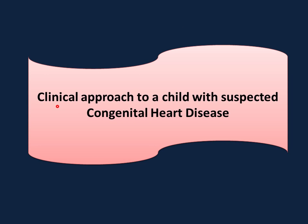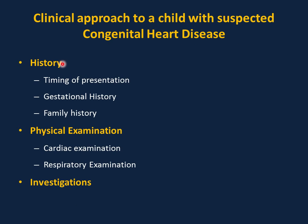The first section is the clinical approach to a child with suspected congenital heart disease. History is critical in the diagnosis of any medical condition. Regarding timing of presentation, cases of severe coarctation of aorta usually present with congestive heart failure in the first week of life. Cases of significant left-to-right shunts usually present with congestive heart failure at 6 to 8 weeks of age.